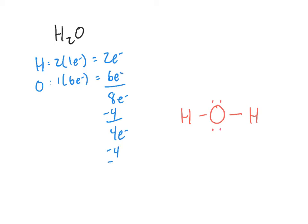We've used four more electrons and now have no electrons remaining. Every atom has an octet: oxygen has 8 electrons around it, and each hydrogen has two electrons around it, which is an octet for hydrogen.